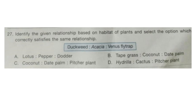Question 27. Identify the given relationship based on the habitat of plants and select the option which correctly satisfies the same relationship. The example is: duckweed is to acacia is to venus flytrap. Look at the options and select your answer. The correct answer is option D: hydrilla is to cactus is to pitcher plant. Duckweed and hydrilla are aquatic plants; acacia is found in the desert and so is cactus; and venus flytrap is a carnivorous plant and so is pitcher plant.